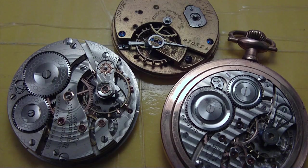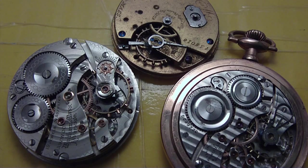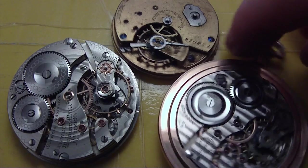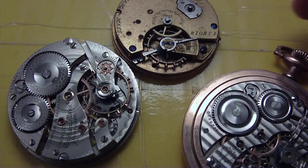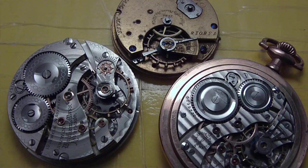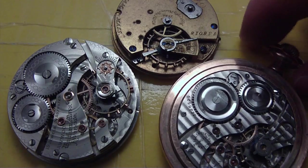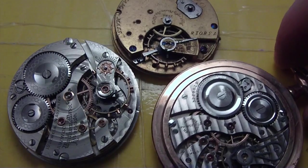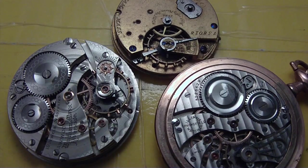So anyway, broken balance staff - basically you wind up your watch and nothing happens. Or, you wind up your watch and it only runs either face up or face down. Those are symptoms that could be a broken balance staff.